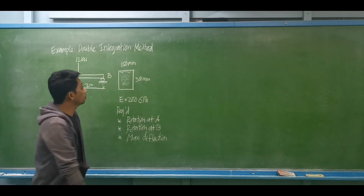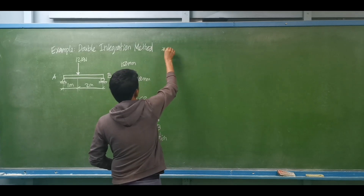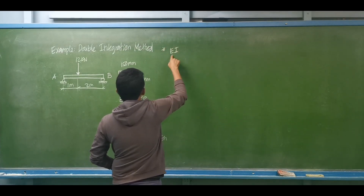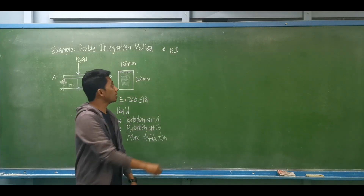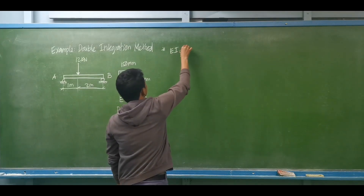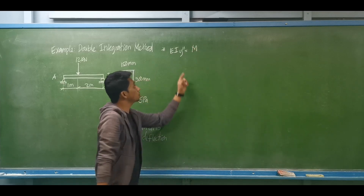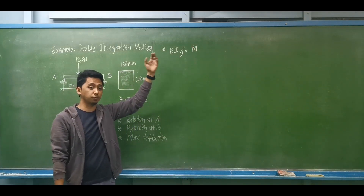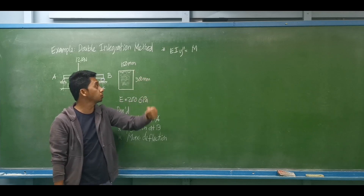So the first thing to do if you are to use the double integration method: we have EI — modulus of elasticity times the moment of inertia — times y double prime, which is equal to the moment. Basically, this is your moment equation from the introduction.